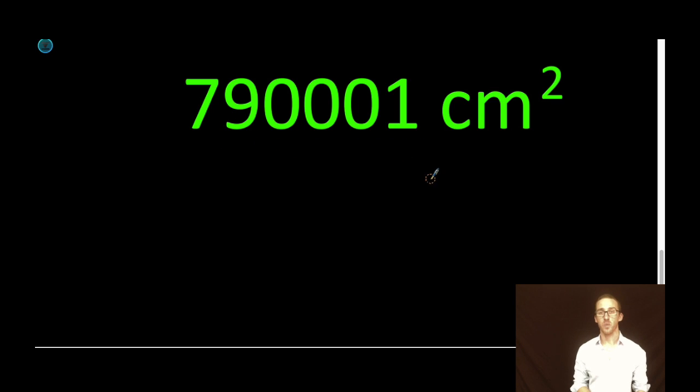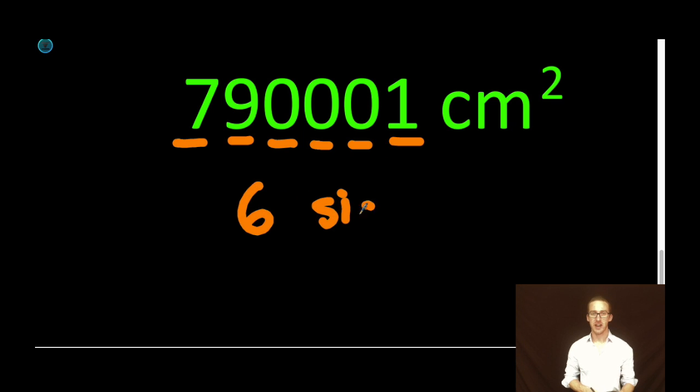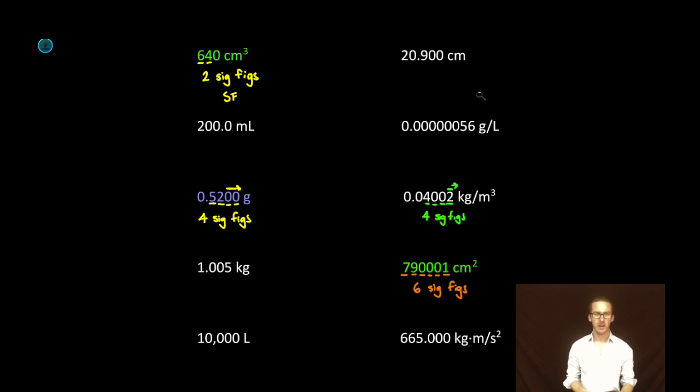790,001 square centimeters. Again, let's count our non-zeros. That's the easy part. The seven, nine, and one. Then we have to ask ourselves, are these zeros between two non-zeros? In fact, they are. So keep in mind, as long as there is a non-zero on each end of the zero, it doesn't matter how many zeros are stuck in between there. They'll be significant. So this one is six sig figs. Boom! And we are done.